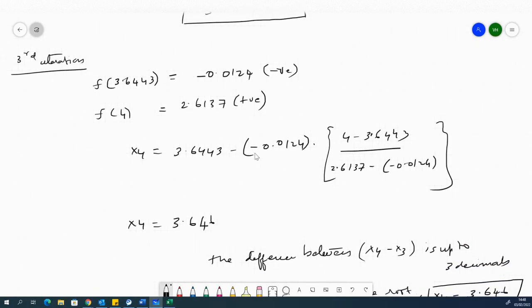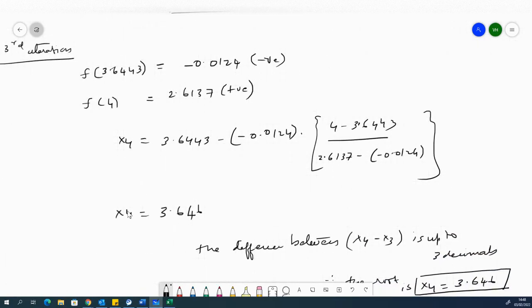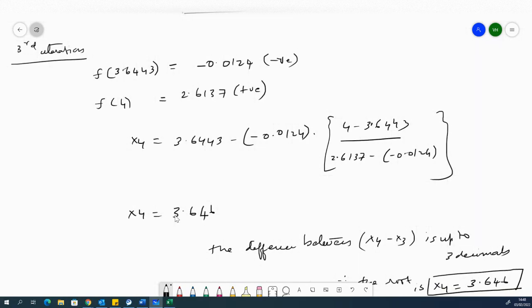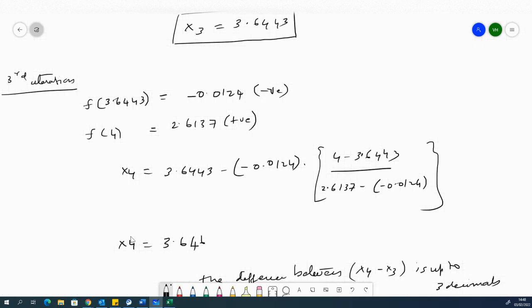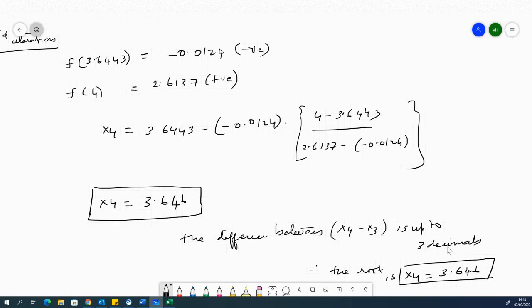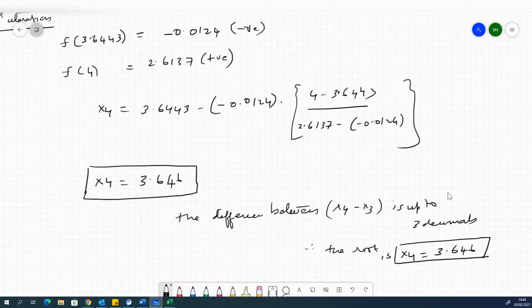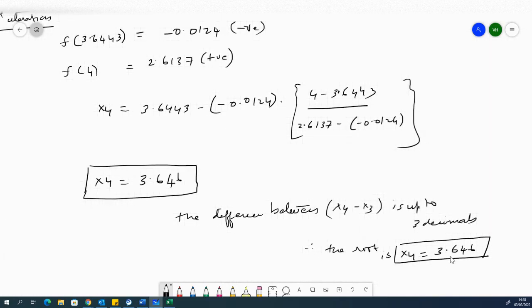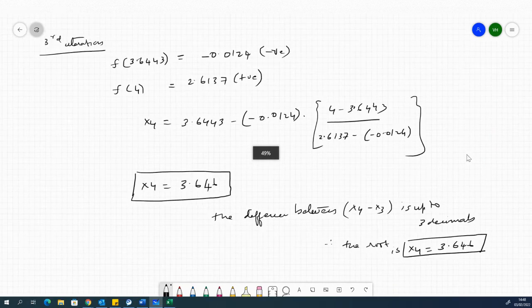Finally, you would see that with respect to x4, you would see that the value of x4 at the third iteration is 3.646. If you take the difference between the x4 and x3, you would find that the decimals are approximately up to 3 decimal places in terms of the difference. Therefore, you can say that the root is x4, which is 3.646 within 3 decimal places.